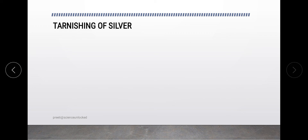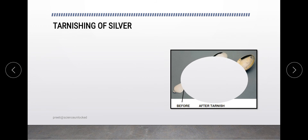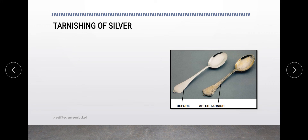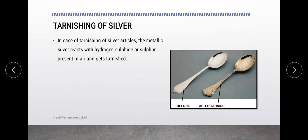One such example is the tarnishing of silver, where silver turns from a shiny surface to a black or dull surface, losing its shine because of reaction with hydrogen sulfide and sulfur present in the air. These are all the different set of chemical changes that we have learned.